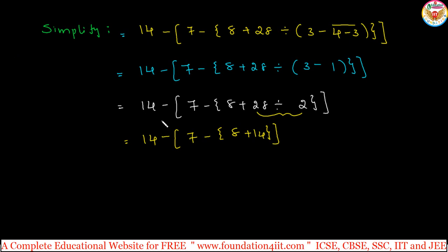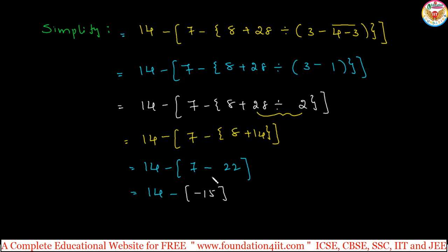After simplifying the curly bracket, the expression becomes 14 - [7 - 22]. Now 7 - 22 = -15. Remove the square bracket: minus × minus = plus, so 14 + 15 = 29. The final answer is 29. For all bracket problems, simplify from the innermost bracket — vinculum, small, curly, then square — outward.